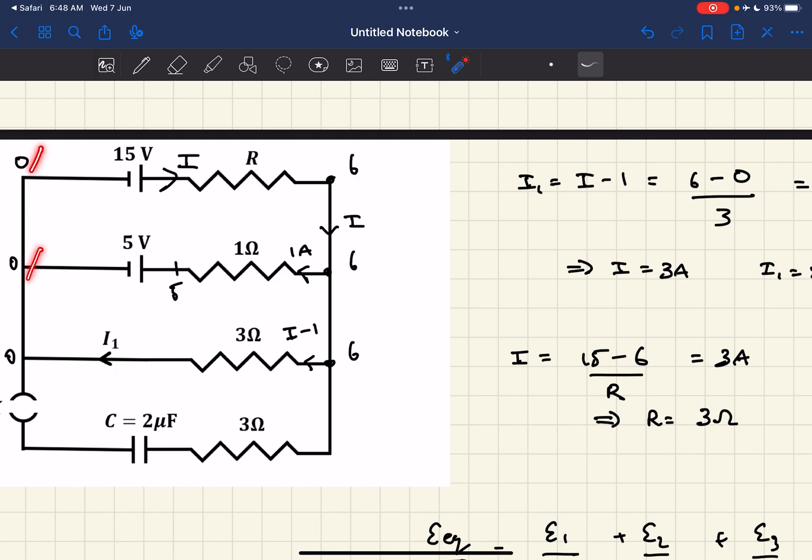If I assume the potential at these nodes as 0 volt, the potential difference across this 1 ohm resistor is 1 ampere times 1 ohm, that's 1 volt. So if this is 0 volt, it would be 5 volt here, and an increase of 1 volt means at this node it would be 6 volt, which is 6 here and here as well.